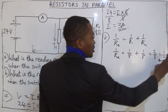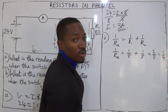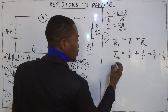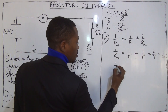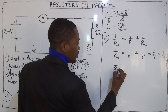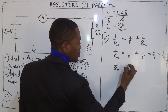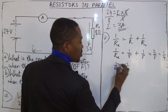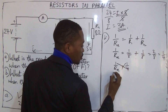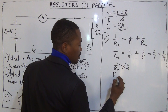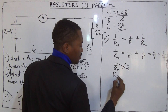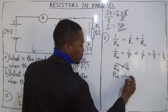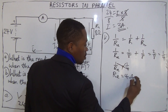Since 1 over R-effective equals 1 over 4, we can cross-multiply to get R-effective equals 4 ohms. That is the effective resistance of the entire circuit.